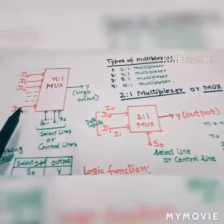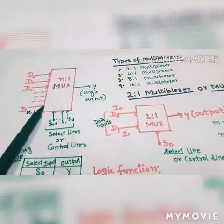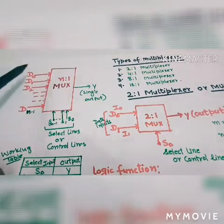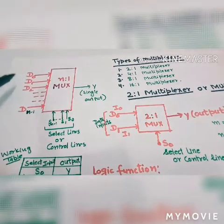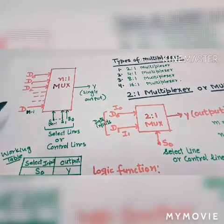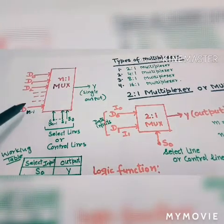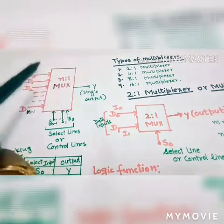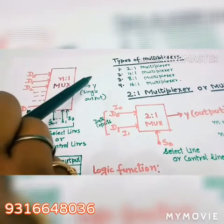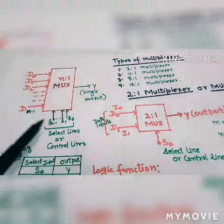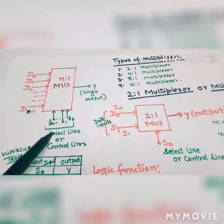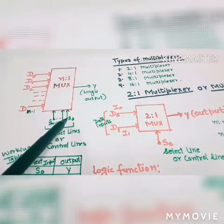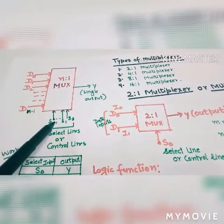This is our multiplexer. We have all these inputs — data inputs denoted as D0, D1, D2, and so on up to D(N-1). We have a single output here. And here we have select lines, which we can also call control lines, denoted S0, S1, up to S(M-1).